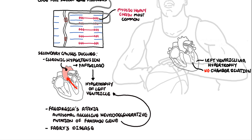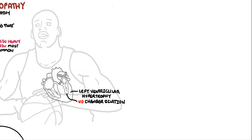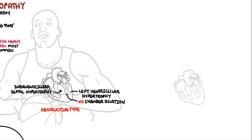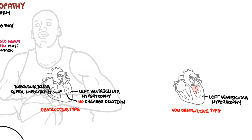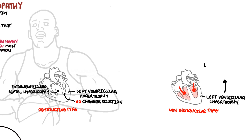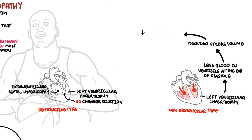In hypertrophic cardiomyopathy there are two main types. The classic obstructive type is characterized by ventricular hypertrophy as well as interventricular septal hypertrophy, which blocks the outflow through the aorta. The non-obstructive type involves basic hypertrophy of the ventricles with increased ventricular wall thickness. During diastole, the thick walls reduce ventricular filling, resulting in reduced preload, reduced end-diastolic volume, and according to the Frank-Starling mechanism, reduced stroke volume and cardiac output.